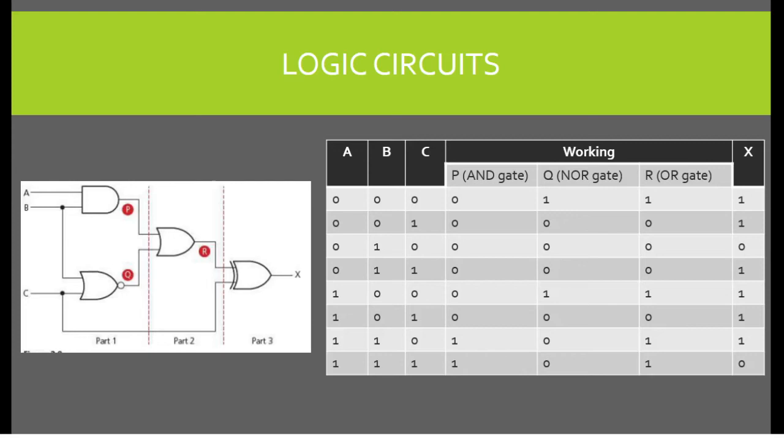Finally, the final gate is an XOR gate with the inputs R and C. Since it is an XOR gate, the inputs must be exactly 1 and 0 or 0 and 1 to get an output of 1. All rows except the second and last row gives an output of 1. That is how you solve the truth table for a given logic circuit.